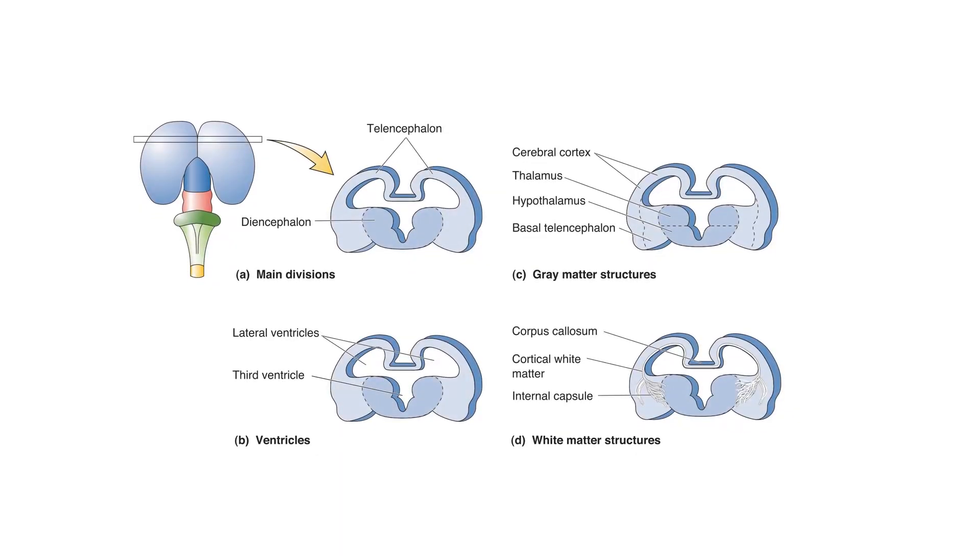Two different types of grey matter form in the telencephalon: the cerebral cortex and the basal telencephalon. Also, the diencephalon differentiates into two structures, the thalamus and the hypothalamus. The neurons of the developing forebrain extend axons to communicate with other parts of the nervous system.